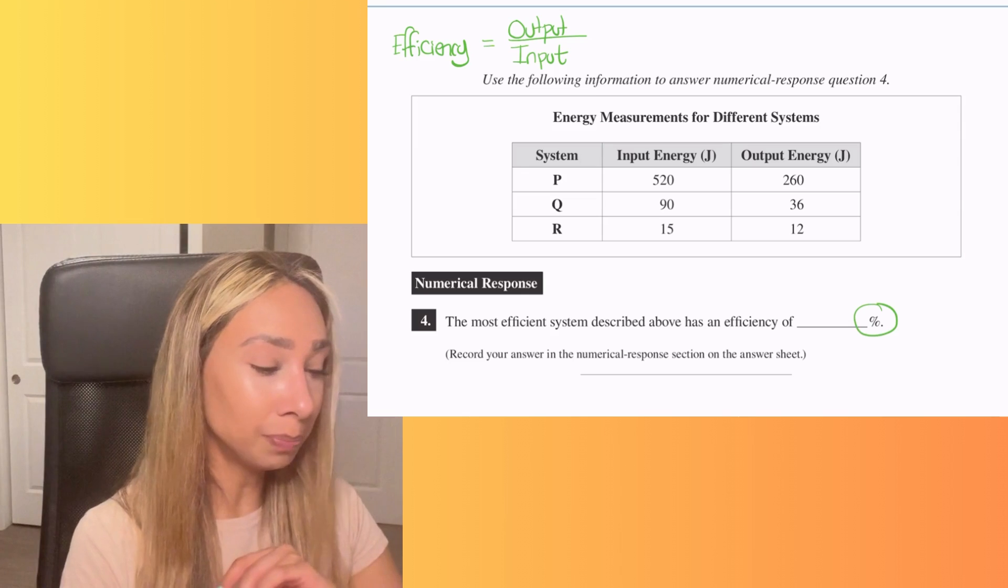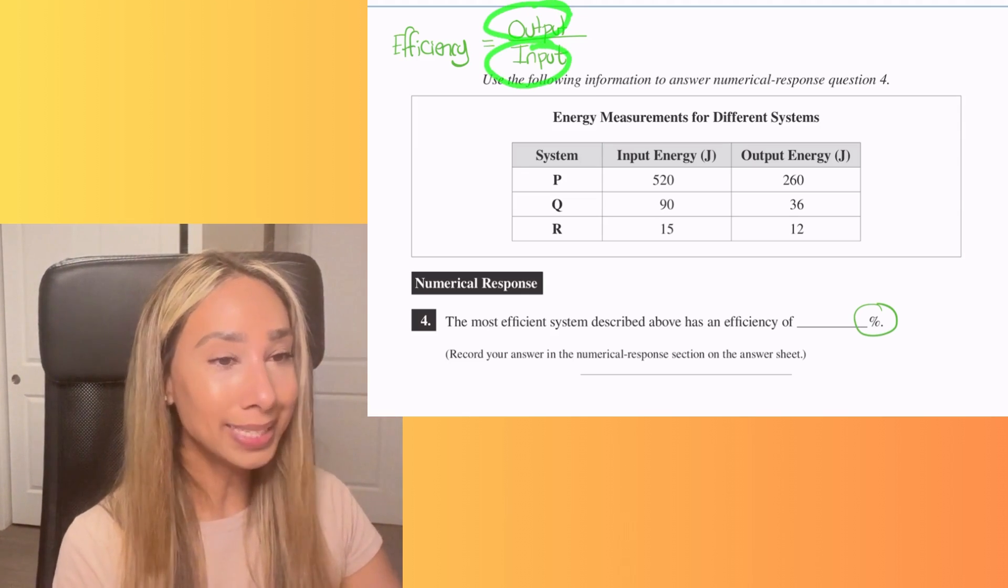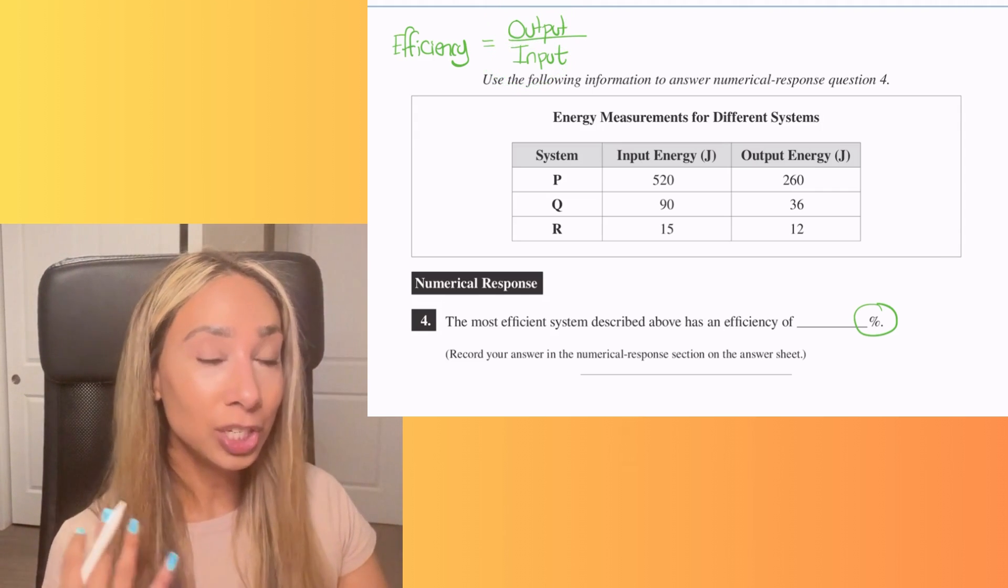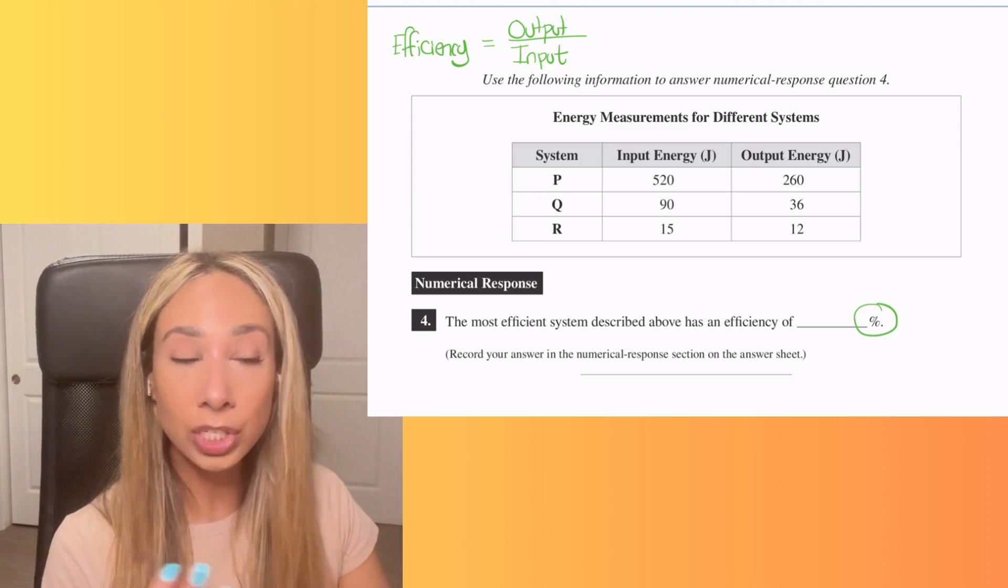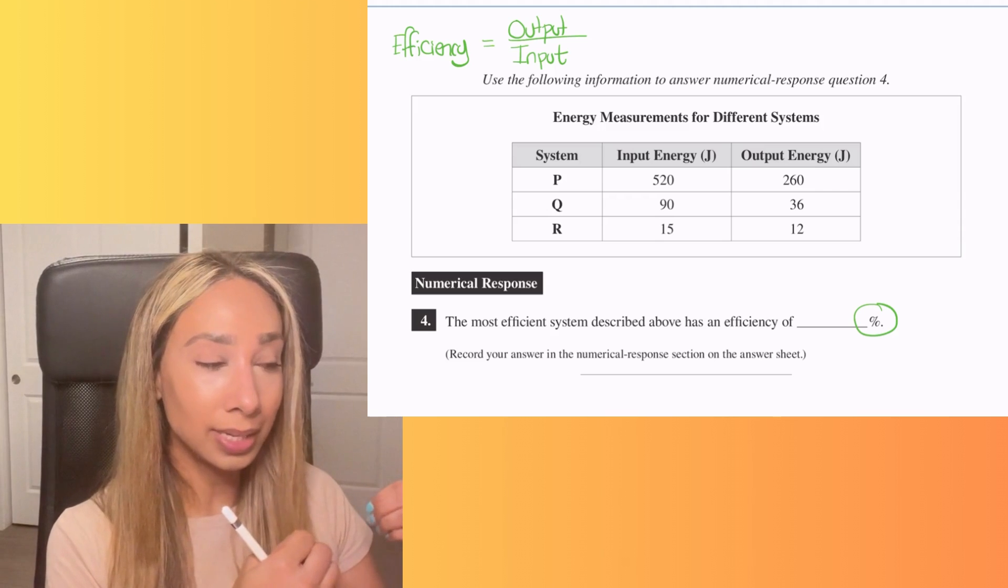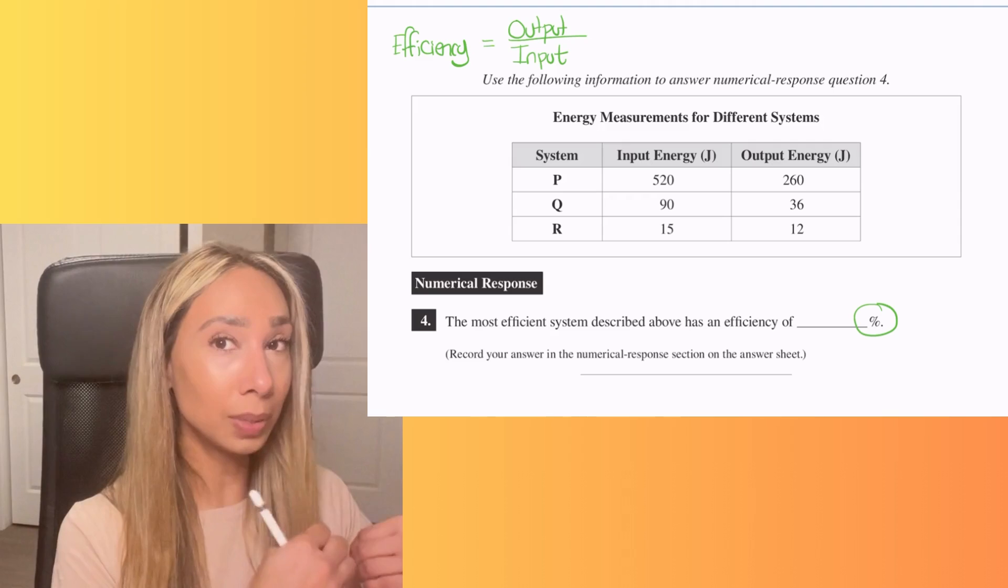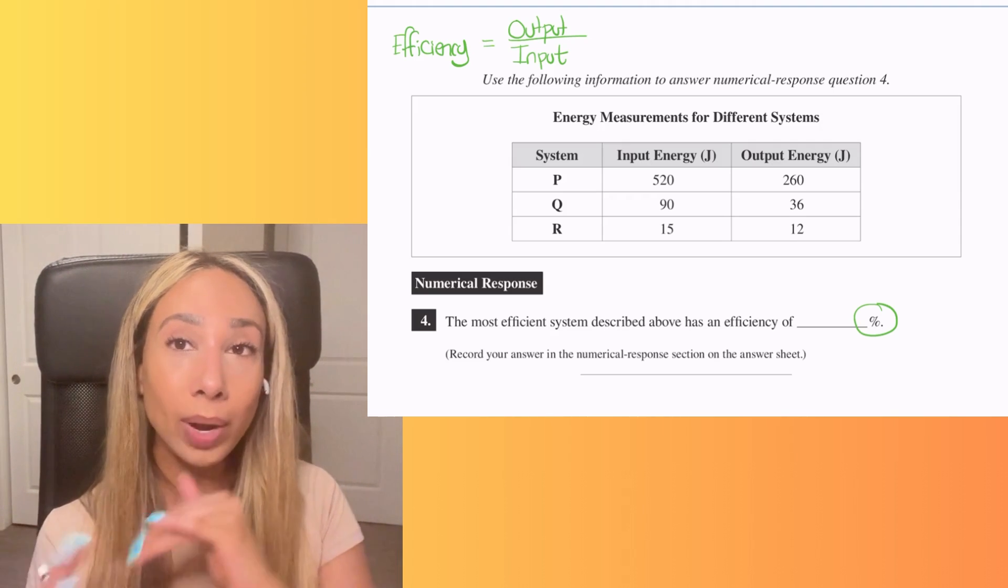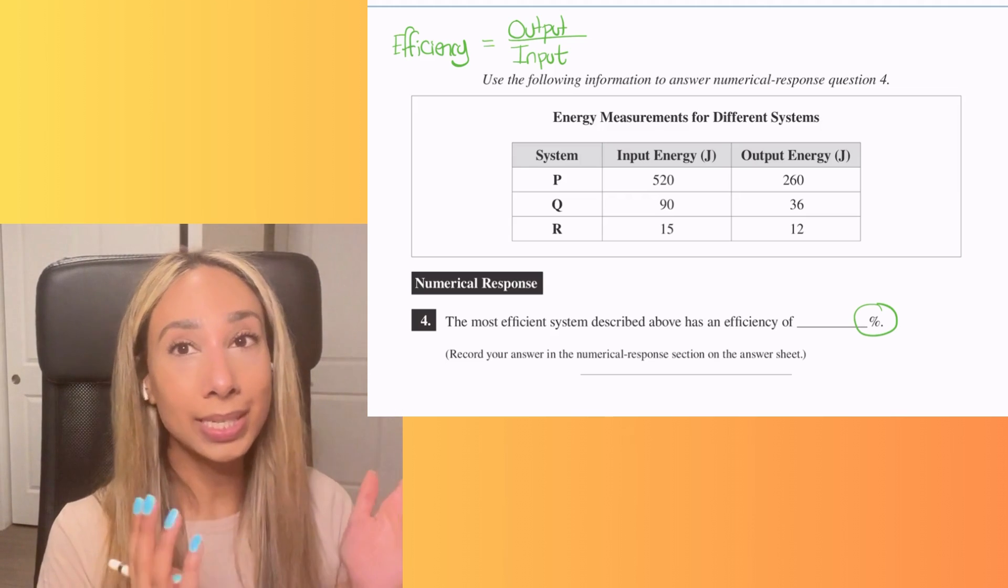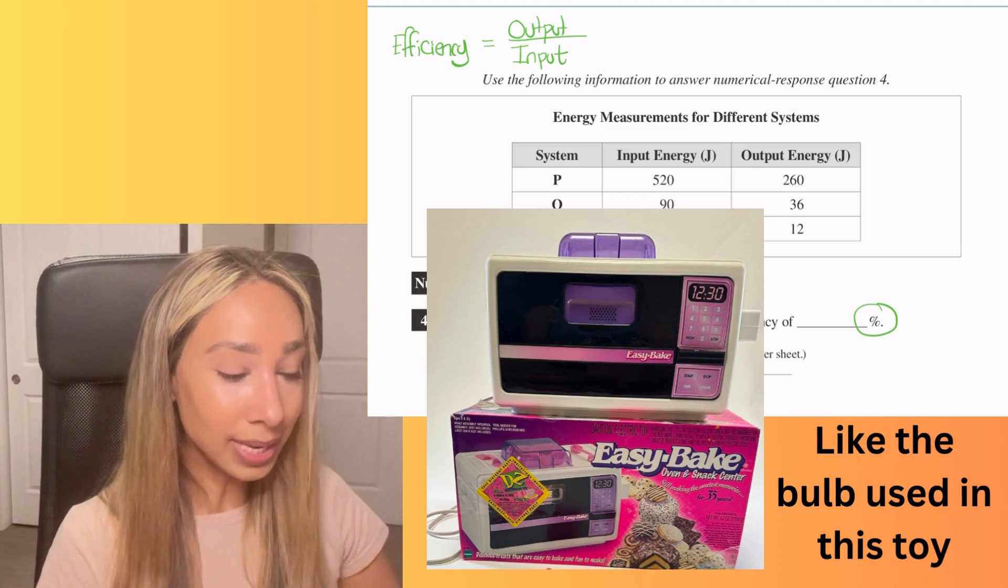So efficiency is measured as output over input, or it's basically using the least amount of inputs to achieve the highest amount of output, right? So that means the system would be efficient. It's going to take the energy that it's receiving and as close as possible, produce that same amount of energy out that way. Nothing is being released as waste, like thermal energy or whatever it is, the waste is going to be.